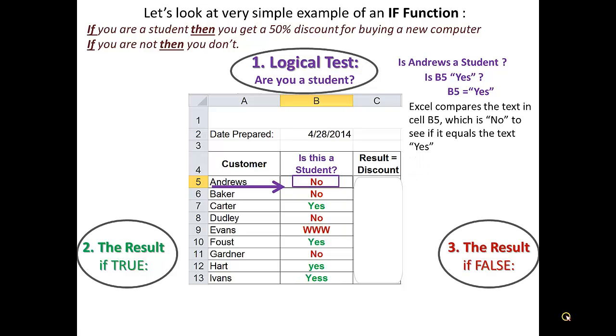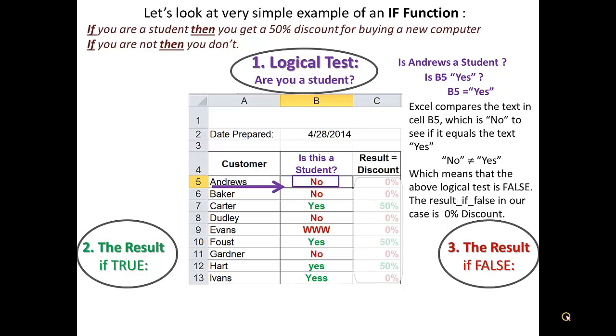Excel makes a quick comparison and sees that B5 cell has a value that is different from the text value yes. It also does not matter what else is in that cell, but only the fact that it is different, which indicates that the logical test is false. The result if false, in our case, is 0% discount.